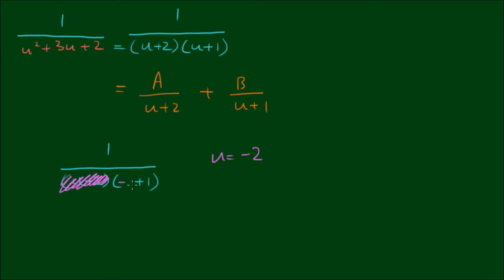And we substitute u equals minus 2 into the other term. So A is equal to 1 on minus 2 plus 1, which equals 1 on negative 1, which equals negative 1. Okay, so for the B coefficient, we let u equals negative 1 and we cover up the u plus 1 term. And we substitute u equals negative 1. So this gives B equals 1 on negative 1 plus 2, which equals 1 on 1, which equals 1.